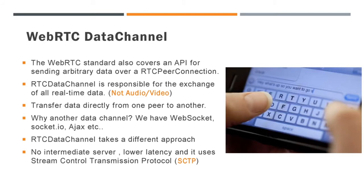This channel is responsible for the exchange of all real-time data — not video and audio data, but text data. Using this channel, we can transfer data directly from one peer to another. You might think: why do we need a data channel when we can use socket or Ajax methods to send data? But for all those methods you require a server. If you are using a socket, data is first sent to the socket, stored on the server, and then sent to the other user. This takes more time. The main advantage of the WebRTC data channel is speed — it does not require any intermediate server and also has lower latency.